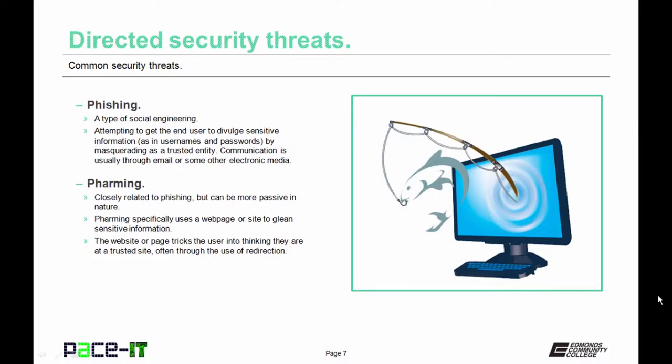There are several different types of social engineering attacks. The first one is phishing. Phishing is an attempt to get the end user to divulge sensitive information such as usernames and passwords or bank account numbers. Phishing always occurs through electronic media, through email or through websites.